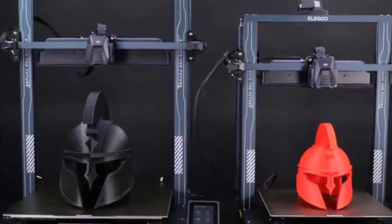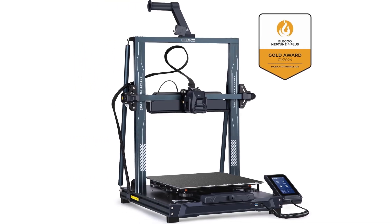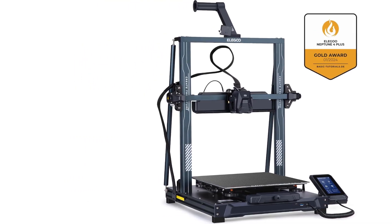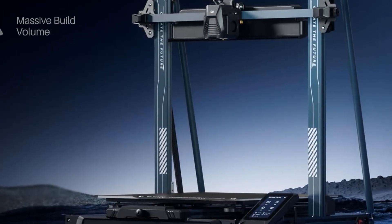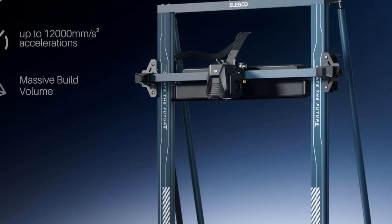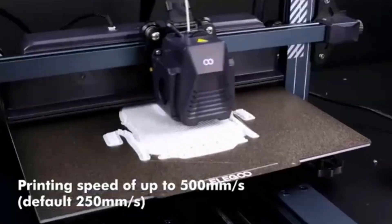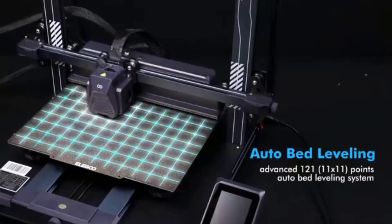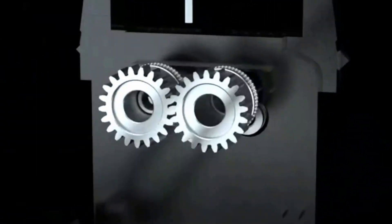The Neptune 4 Plus has one of the largest frames of any 3D printer we have reviewed. It measures 25.2 by 21 by 22.8 inches HWD and weighs 32 pounds, so you will need to find ample room for it on a table or workbench. Its printing dimensions of 15.2 by 12.6 by 12.6 inches HWD are also very large, particularly for a sub-$500 printer.